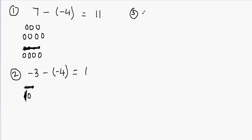The next example is negative 5 minus negative 1. I make 5 negative counters, and I want to take away 1 negative counter from them. This time I already have a negative counter available, so I don't need to add a zero pair. I just take away 1 negative counter, and I'm left with 4 negative counters. So the answer is negative 4.